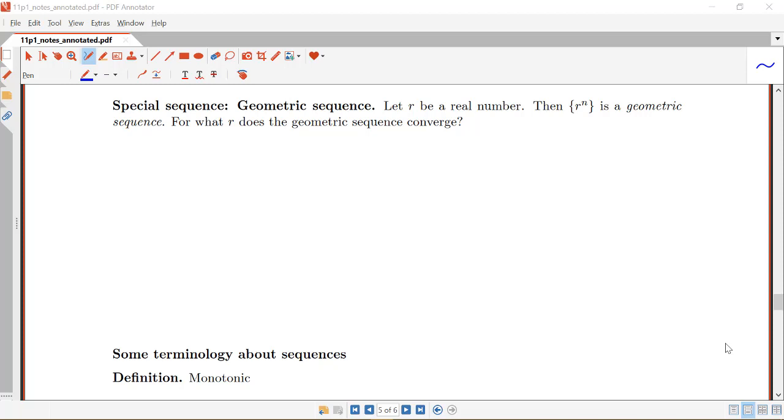In this video we're going to be talking about a special sequence called a geometric sequence. The definition of the geometric sequence is the following: let r be a real number, then r to the n would be the formula for the nth term of our geometric sequence.